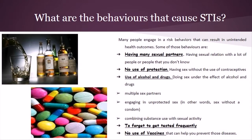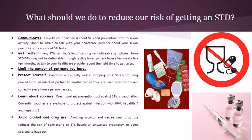Other risk behaviours include doing sex under the effect of alcohol and drugs, engaging in unprotected sex — in other words, sex without a condom — combining substance use with sexual activity, forgetting to get tested frequently, and not using vaccines that can help prevent those diseases.